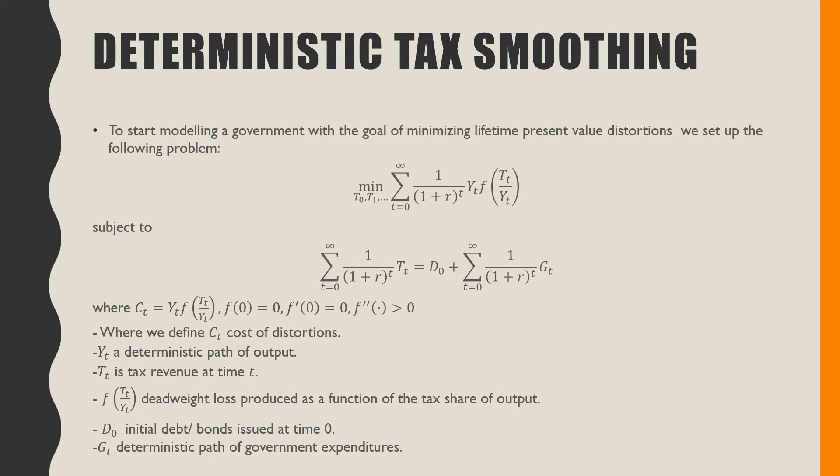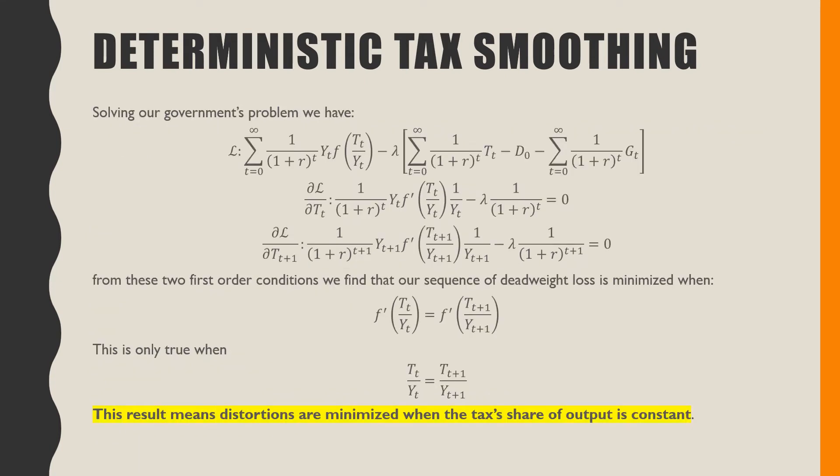Solving our government's problem, we have the following Lagrangian. One of the things you may be confused about is that I put a minus sign here, but it really doesn't matter - it could be a plus or minus sign, the result will be the same. I just put a minus sign there to make things a little bit clearer.